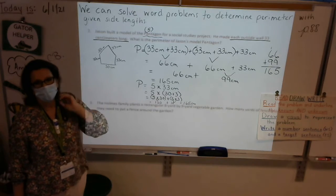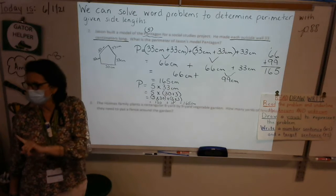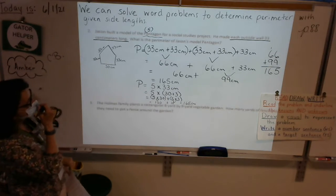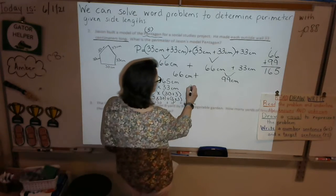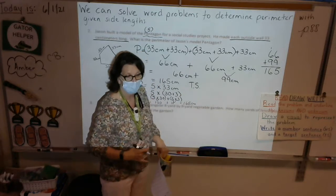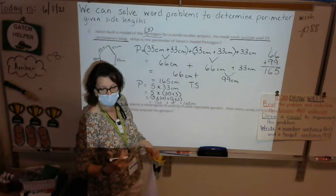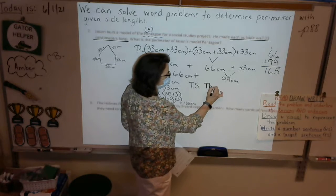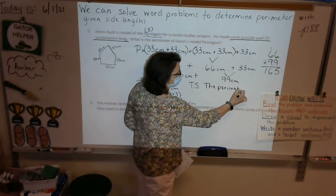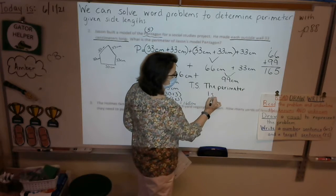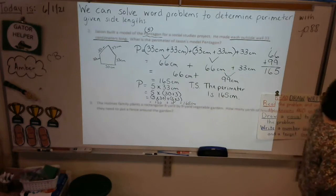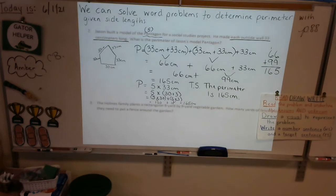So how many of you prefer adding 33 five times? Raise your hand. How many of you would prefer doing 5 times 33? Could you do 5 times 33 without Mrs. Reed walking you through the steps? Yes. You could do that. I just wanted to shake up the head. Okay. All right, very last thing. What is the perimeter of Jason's Model Pentagon? We need a TS. And we answered that in a complete sentence. What is the perimeter? We're going to say the perimeter is 165 centimeters.